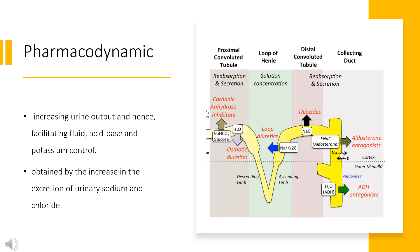Several reports have indicated that torsemide presents a long-lasting diuresis and less potassium excretion, which can be explained by its effect on the renin-angiotensin-aldosterone system. This is very similar to the effect observed with combiotherapy using furosemide and spironolactone, characterized by a decrease in plasma brain natriuretic peptide and improved measurements of left ventricular function.